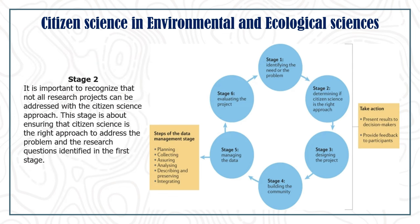The second stage recognizes that not all research projects can be addressed with a citizen science approach. This stage is about ensuring citizen science is the right approach to address the problem and research questions. The goal is to understand whether involving citizen science participation will help achieve the desired results, while at the same time benefiting participants by addressing their needs or fostering new skills and expertise. If both conditions can be met, then a citizen science approach is likely appropriate for the project.